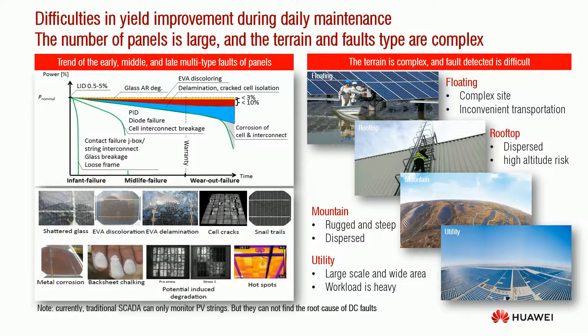The glass breakage, so-called shatter glass, is due to quality or environmental causes such as impact by a flying rock or material. Shatter glass not only has an impact on the output power of one module, but also causes the mismatch loss of strings containing this module. More importantly, the increased risk of safety occurs because the isolation level decreases largely when the glass is broken. It is easy to cause electrical shock on a rainy day or when water remains on the module surface. Therefore, when glass breakage happens, it is advised to replace the panel as soon as possible.